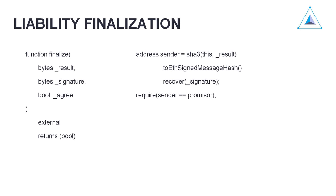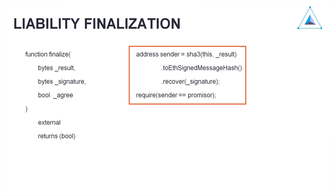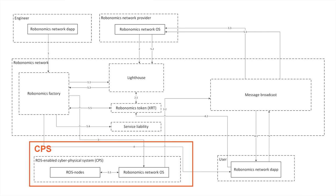After production is done, the lighthouse settles a finalization transaction for the liability smart contract. For this we also use the message bus, and we also use signature recovery, and we check that the sender of results is equal to the liability promiser.